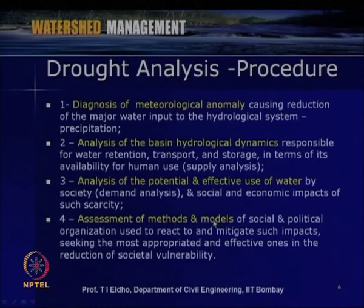The fourth step is assessment of methods and models of social and political organization used to react to and mitigate drought impacts, seeking the most appropriate and effective ones in the reduction of societal vulnerability. In summary, drought analysis involves four steps: diagnosis of meteorological anomaly, analysis of basin hydrological dynamics, analysis of potential and effective use of water, and assessment of methods and models.